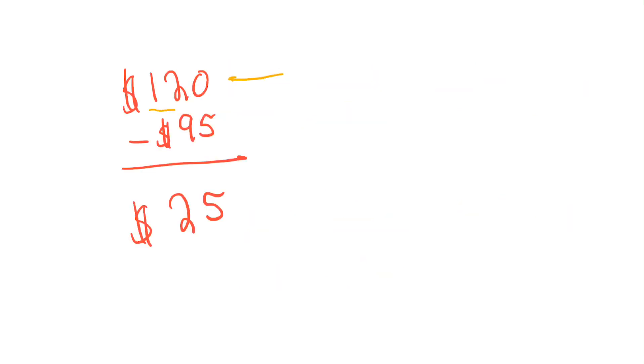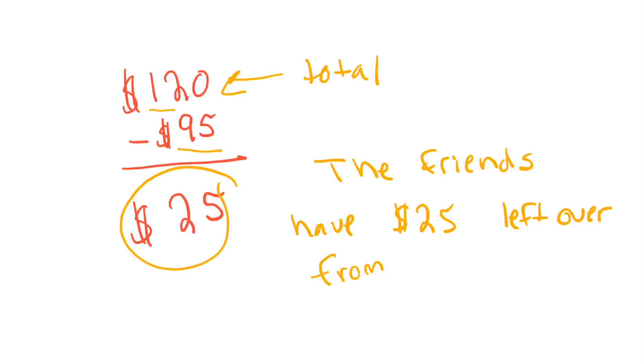So that is what I did. This is the total, 120. And I'm subtracting 95 from it. My answer is 25. I don't just stop right there. I make sure that I write a complete math sentence. The friends have $25 left over from the fair.